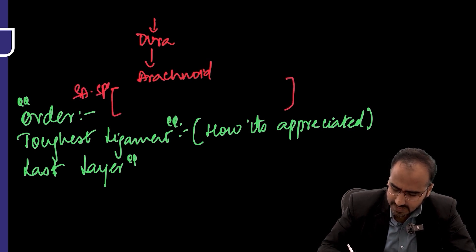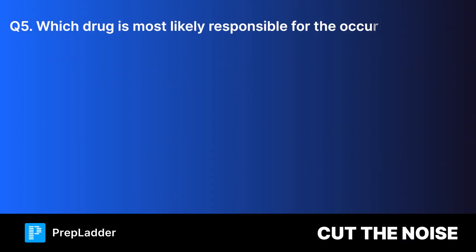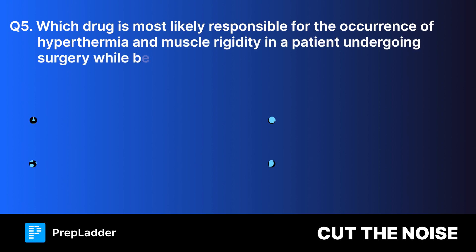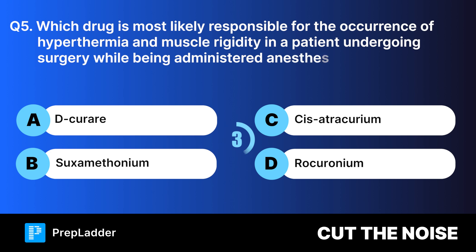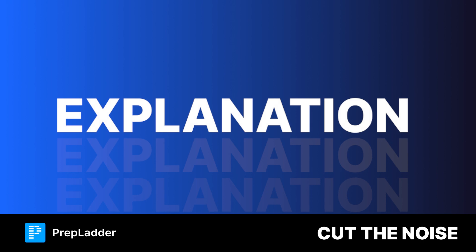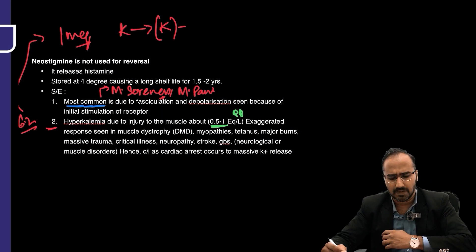Question number five: which drug is most likely responsible for hypothermia and muscle rigidity in a patient undergoing surgery while being administered halothane anesthesia? The correct answer is suxamethonium. The most common side effect to remember: the second most common side effect is hyperkalemia, and the third side effect of suxamethonium is bradycardia.